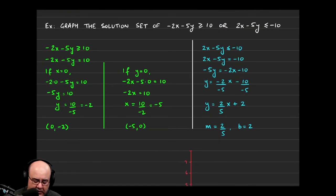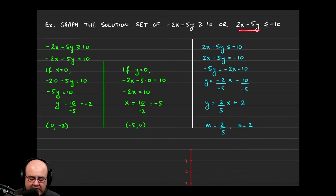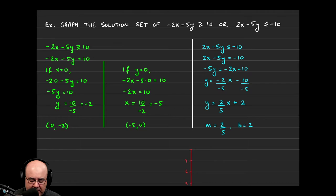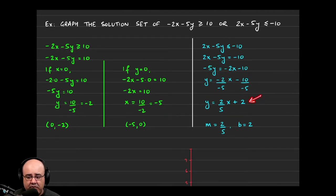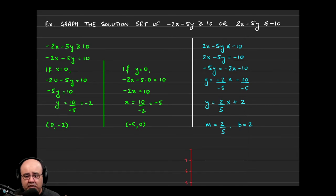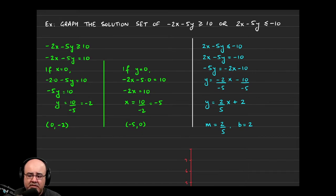For the second one, if we're given 2x minus 5y is less than or equal to negative 10, we swap out the inequality for the equation just temporarily. I wanted to convert it to slope-intercept form and then use the y intercept and the slope to graph it. You have complete freedom on which technique you want to use to graph lines — you can pick points, make a table of values, convert to slope-intercept form, or find the x and y intercepts. The more you do these problems, the more obvious it becomes which technique is easiest.